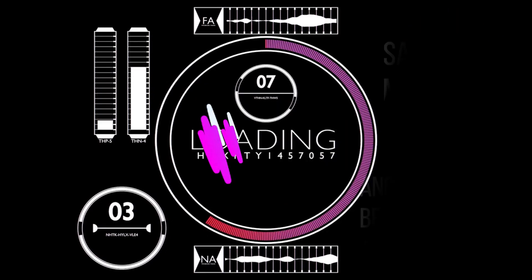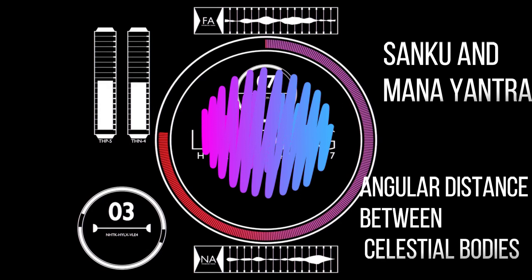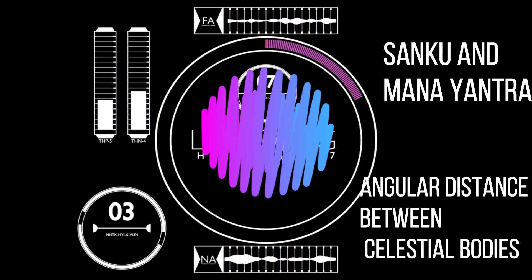Shanku and Mana Yantra are used to measure longitude, latitude, altitude and angular distance between celestial objects.